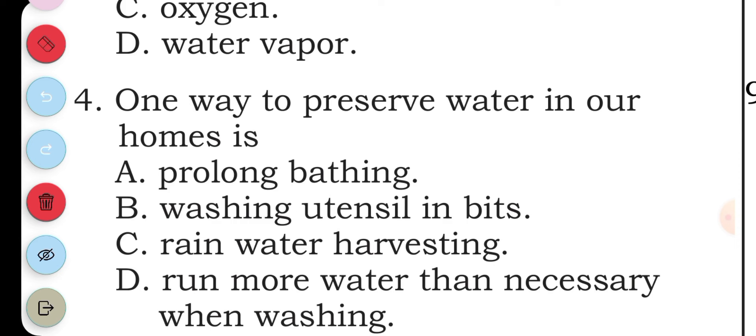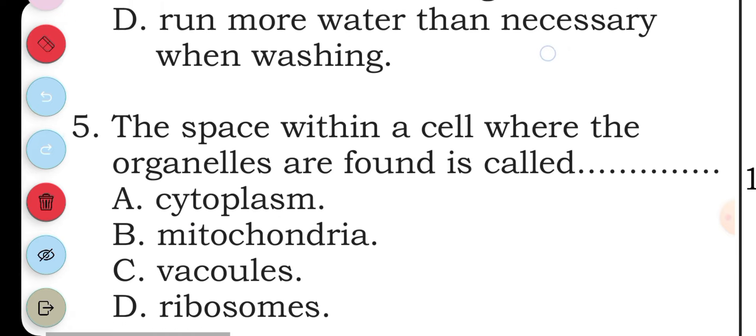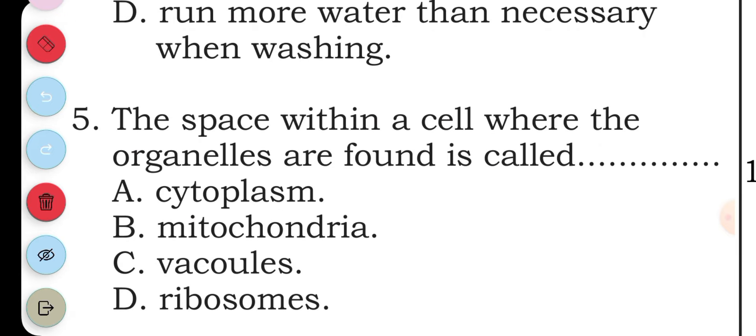The answer to question four is C, rainwater harvesting. Question five: the space within a cell where the organelles are found is called: A cytoplasm, B mitochondria, C vacuoles, D ribosomes.